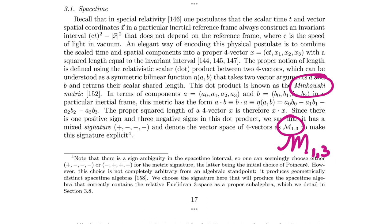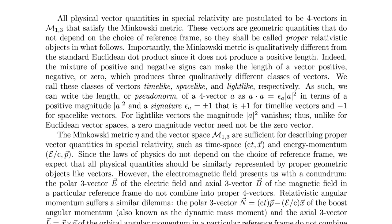So no geometric algebra so far. In the next paragraph, all physical vector quantities in special relativity are postulated to be four-vectors in this vector space M(1,3). All physical quantities are four-vectors in M(1,3) that satisfy the Minkowski metric — otherwise it would literally violate special relativity.